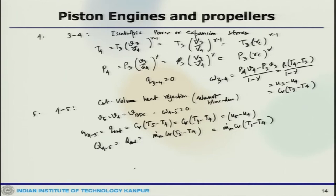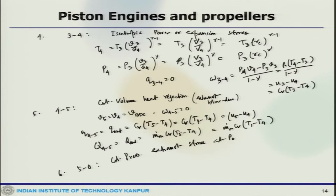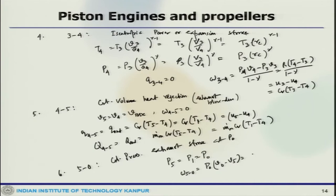The last process, 5→0, is a constant-pressure exhaust stroke at P_0. The piston executes an exhaust stroke during which the burned gases are purged from the cylinder through the open exhaust valve. Here P5 = P1 = P_0, and the specific work is W_50 = P_0·(V_0 − V1).